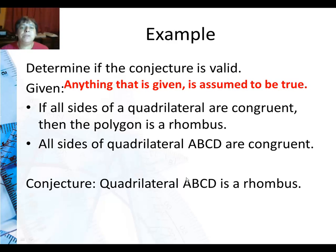So we say if all sides of a quadrilateral are congruent then the polygon is a rhombus. So this statement is given as true. And actually it is true. If all sides of a quadrilateral are congruent then it is a rhombus. Now here's the extra thing that's given to you as true: All sides of quadrilateral ABCD are congruent.